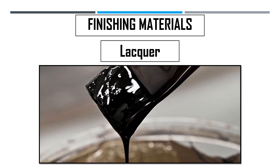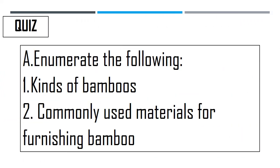If you have questions regarding this discussion, kindly direct your concern to your assigned teacher. Before we end, you need to answer the following activity — write it on a whole sheet of paper. First, enumerate the kinds of bamboos. Second, enumerate the commonly used materials for finishing bamboo. I hope you learned something from this discussion. Thank you for watching. Goodbye everyone.